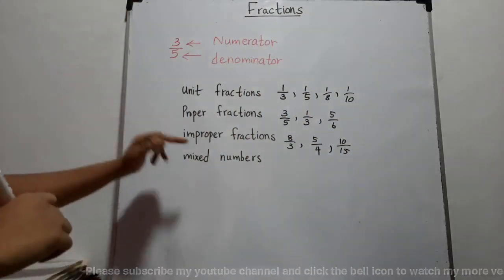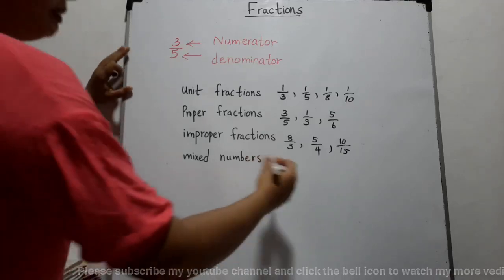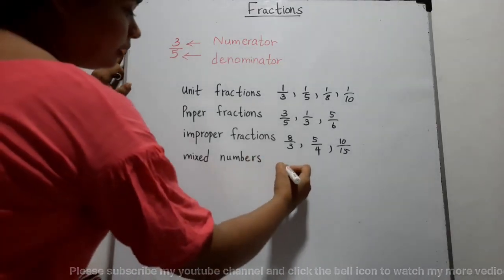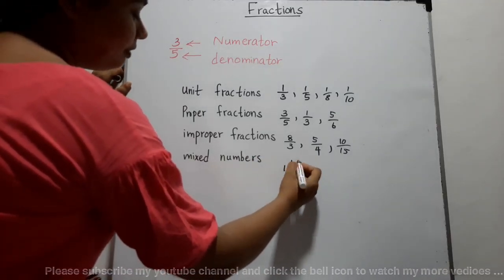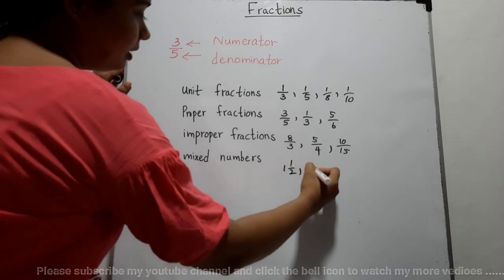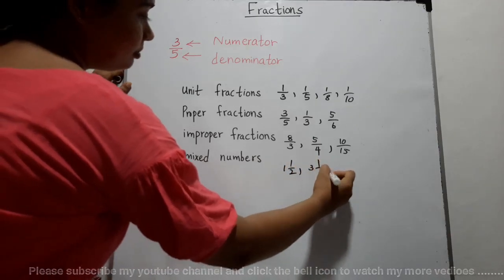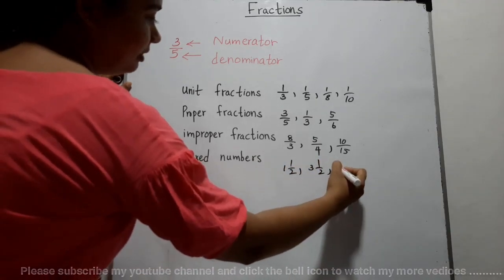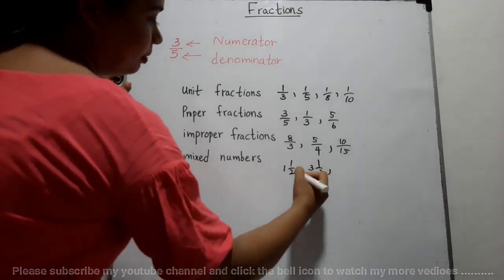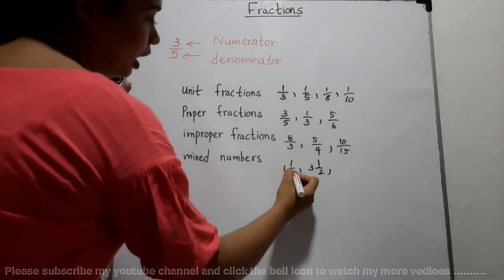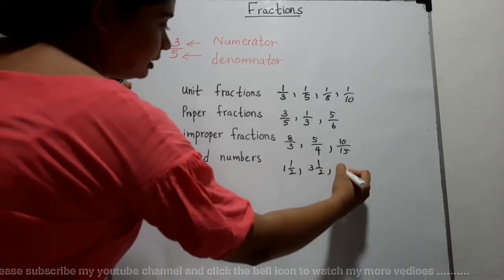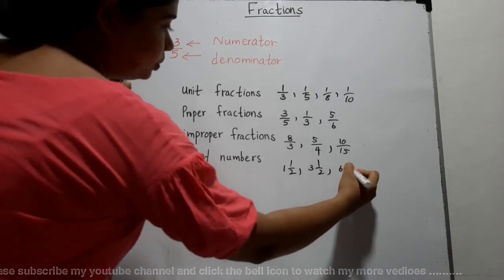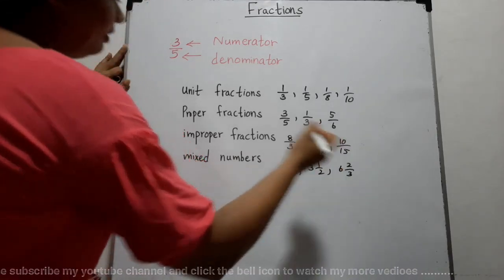Then mixed numbers — including a whole number part and a fractional part — like 1 and a half, 3 and a half, 6 and 2 thirds, likewise.